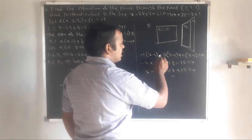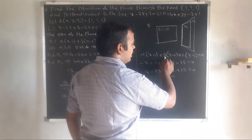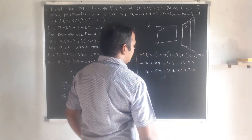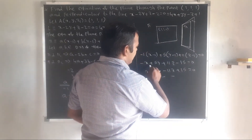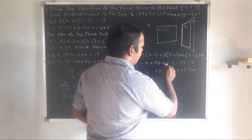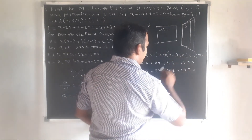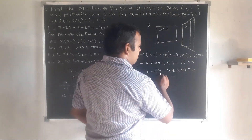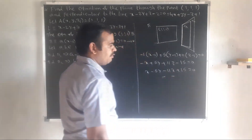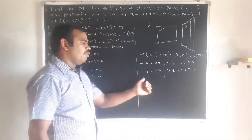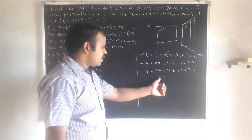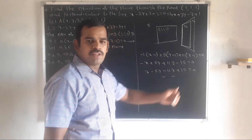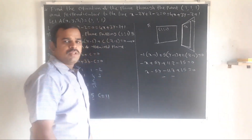Substituting a equal to minus 1, b equal to 5, c equal to 11 into the plane equation: minus 1(x minus 1) plus 5(y minus 1) plus 11(z minus 1) equal to 0, giving minus x plus 5y plus 11z minus 15 equal to 0. Therefore the required plane equation is x minus 5y minus 11z plus 15 equal to 0. Thank you all.